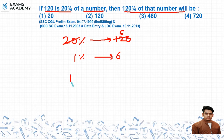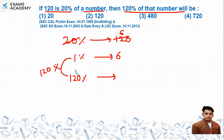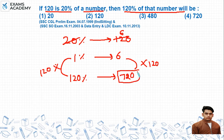Now, to find 120% of the number, we multiply 600 by 120, giving us 720. So 120% of the number is 720, and option number four is correct.